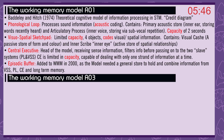The working memory model. Baddeley and Hitch, 1974. A theoretical cognitive model of information processing in short-term memory. Questions on the working memory model and the multi-store model will often credit the diagram. The phonological loop processes sound information, so is acoustically coded. It contains the primary acoustic store — the inner ear — storing words recently heard, and the articulatory process — the inner voice — storing via sub-vocal repetition. Capacity of 2 seconds. The visuospatial sketchpad has a limited capacity of around 4 objects and encodes visuospatial information. It contains a visual cache — a passive store of form and colour — and an inner scribe, or inner eye — an active store of spatial relationships. The central executive is the head of the model, receiving sense information. It filters information before passing it onto the two slave systems: the phonological loop and the visuospatial sketchpad. The central executive is limited in capacity, capable of dealing with only one strand of information at a time.